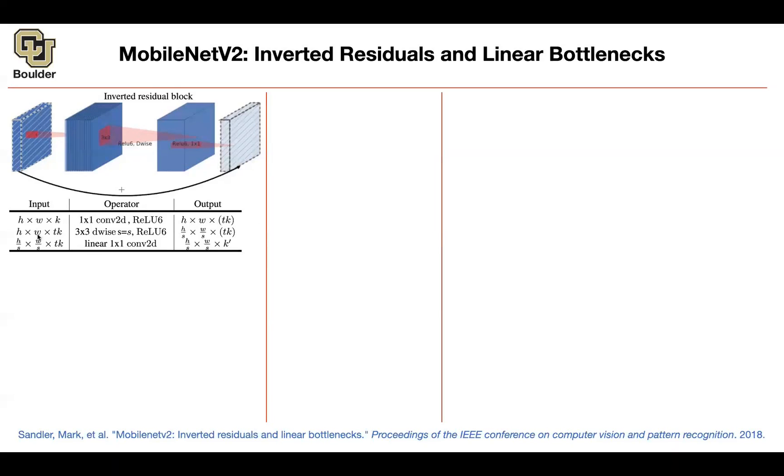Now that's going to be the input to the next operation, the depth-wise separable convolution with a striding of s. You do another ReLU. So whenever you do a stride, your resolution is going to drop and the number of channels is still the same as before.